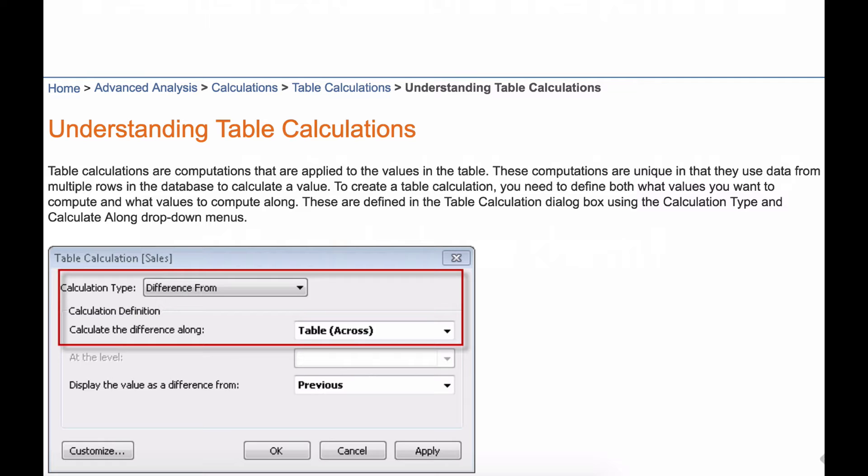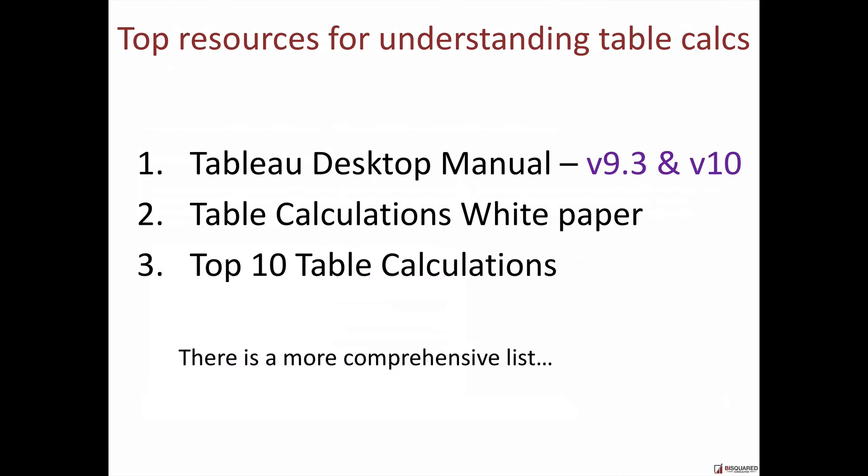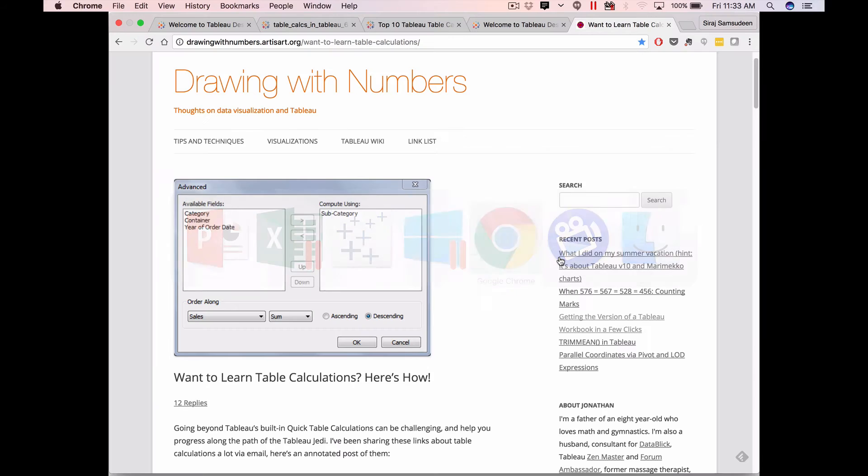There are a lot more resources. There's a white paper, there's a top 10 table calculations - the purpose of all of them is to help somebody understand and get a sense of this. There's even a more comprehensive list maintained by one of the Zen Masters, Jonathan.